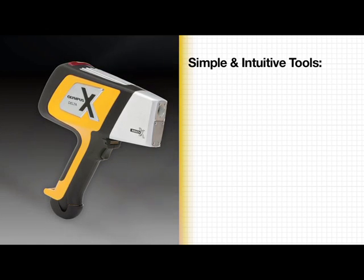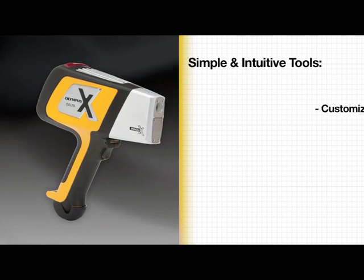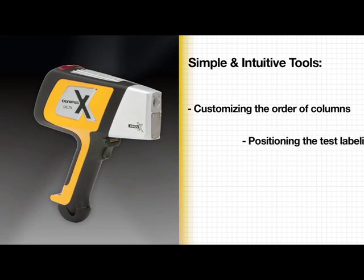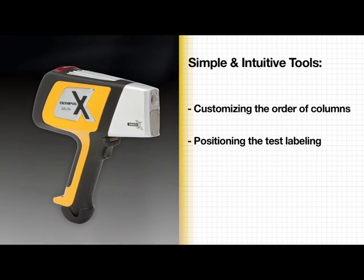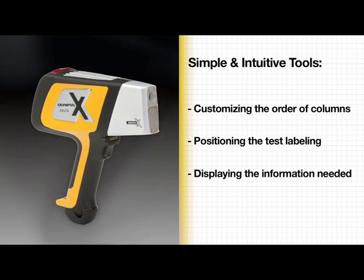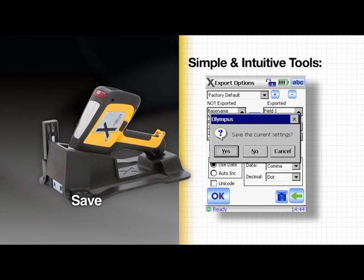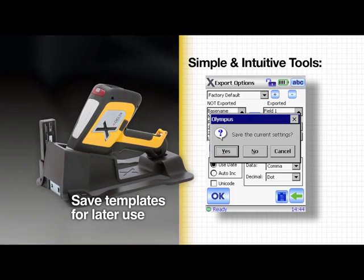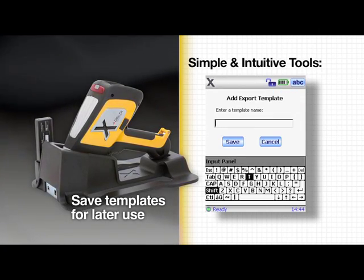The Delta has simple intuitive tools for customizing the order of columns, positioning the test labeling, and displaying the information needed. If your organization requires more than one reporting format, you can easily save templates for later use.